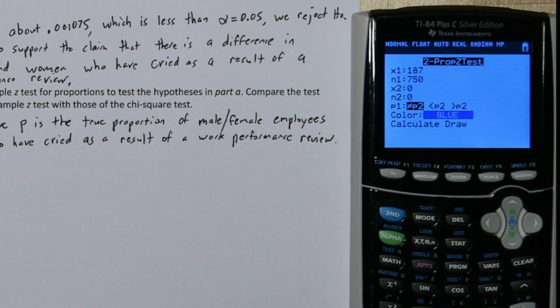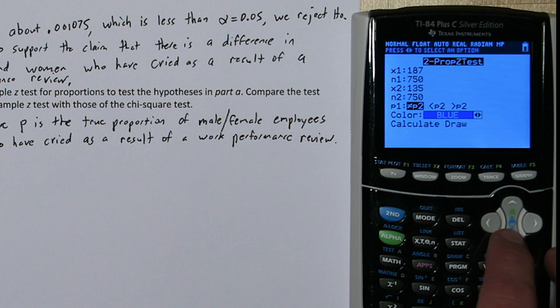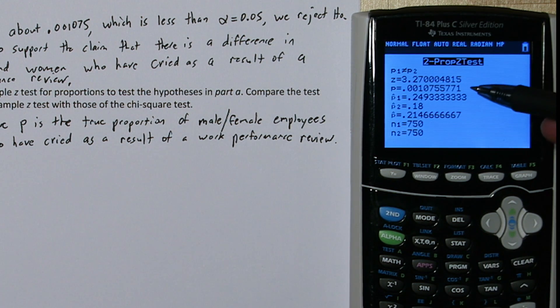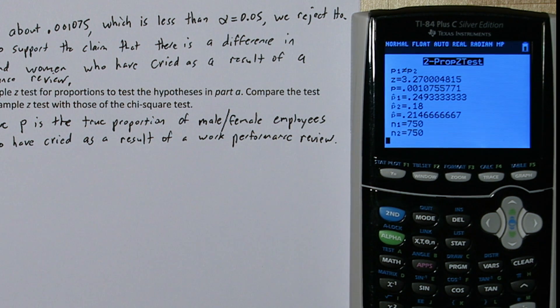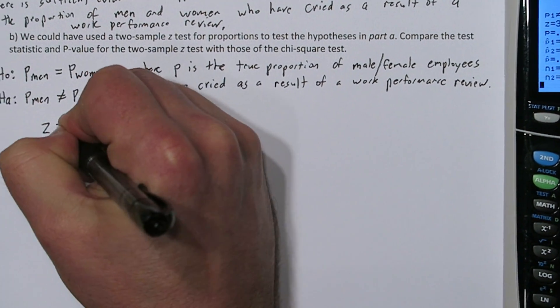Now x2 is the number of women who have cried. And this is also going to be a 750, the total number of females. Now what we're interested in is if these proportions are different. So we'll choose the not equal to option. Now if we go down to calculate, here's our test statistic and here's our p-value. We can also see the sample proportion of men that cried was about 25% versus 18% for women. And was that difference significant? Yeah, our p-value says it was. Let's write down our test statistic and p-value.